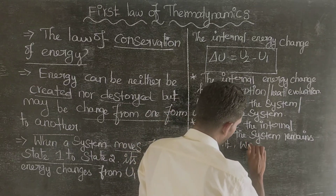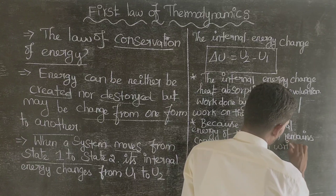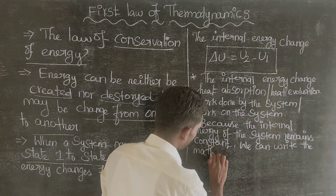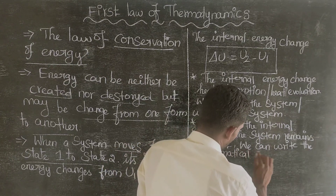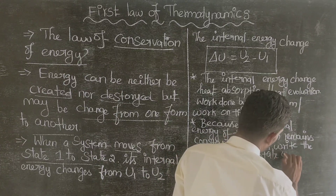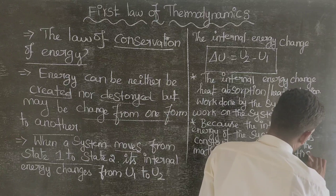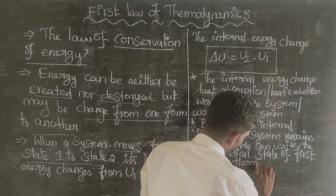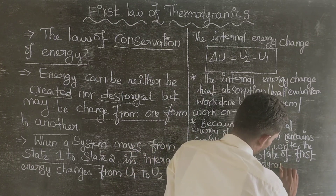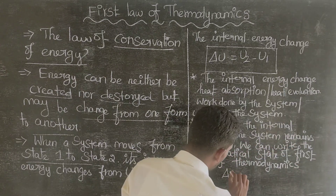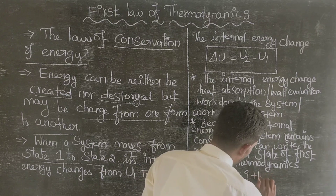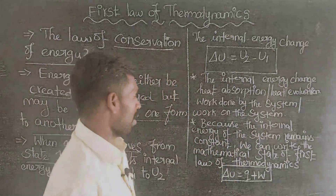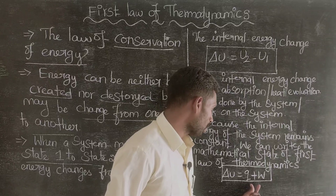We can write the mathematical statement of the first law of thermodynamics as: delta U equal to Q plus W. This is the first law of thermodynamics in mathematical form.